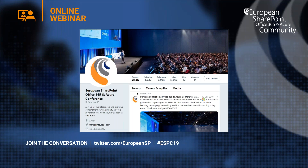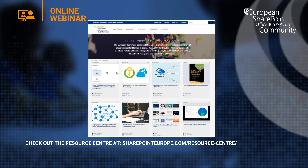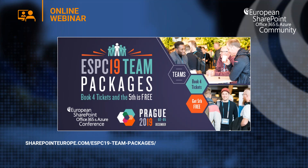Remember to join in the conversation about today's webinar on Twitter. Our Twitter handle is at European SP and our hashtag is ESPC19. Don't forget to check out the Resource Centre, updated daily with the latest blogs, ebooks, webinars and how-to videos. Simply visit SharePointEurope.com and click the content link at the top. ESPC19 team discounts allow you to book four tickets and receive your fifth ticket free — a huge 20% discount worth up to €1,795. Join the best SharePoint, Office 365 and Azure practitioners in the world in Prague this December.